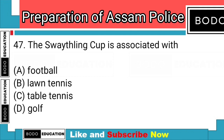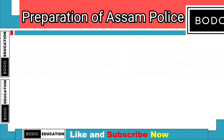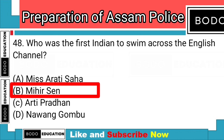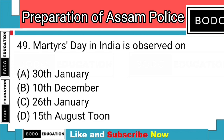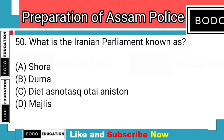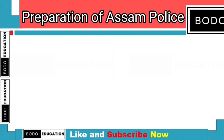Question number 47: The Swaythling Cup is associated with? Answer: Option C — Table Tennis. Question number 48: Who was the first Indian to swim across the English Channel? Answer: Option B — Mihir Sen. Question number 49: Martyrs' Day in India is observed on? Answer: Option A — 30 January. Question number 50: What is the Iranian parliament known as? Answer: Option D — Majlis.